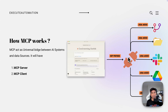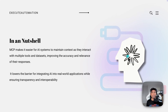All the data you're getting is not going to the cloud — it resides within your machine and is stored within the local MCP server. That is another real power of MCP. The concept looks similar to RAG, but it's way beyond RAG because you're connecting with different data sources in a super real-time fashion. In a nutshell, MCP makes it easier for AI systems to maintain context as they interact with multiple tools and datasets, improving accuracy and relevance while lowering the barrier to integrating AI into real-world applications.